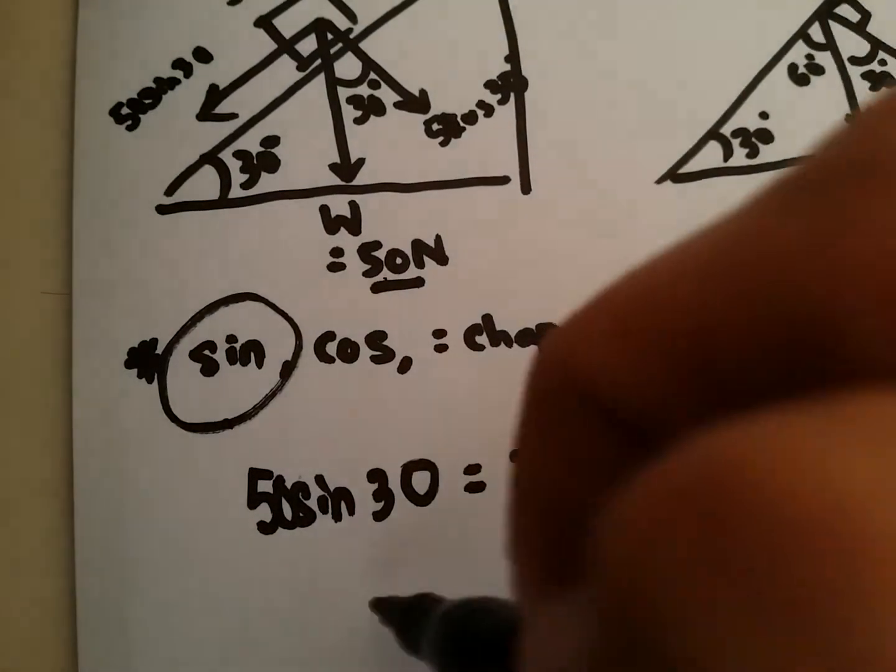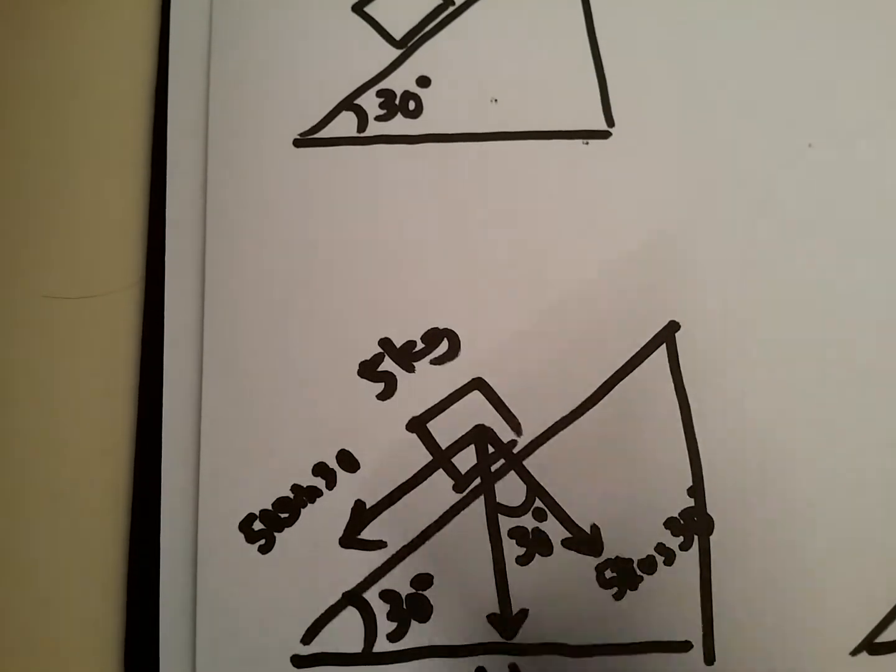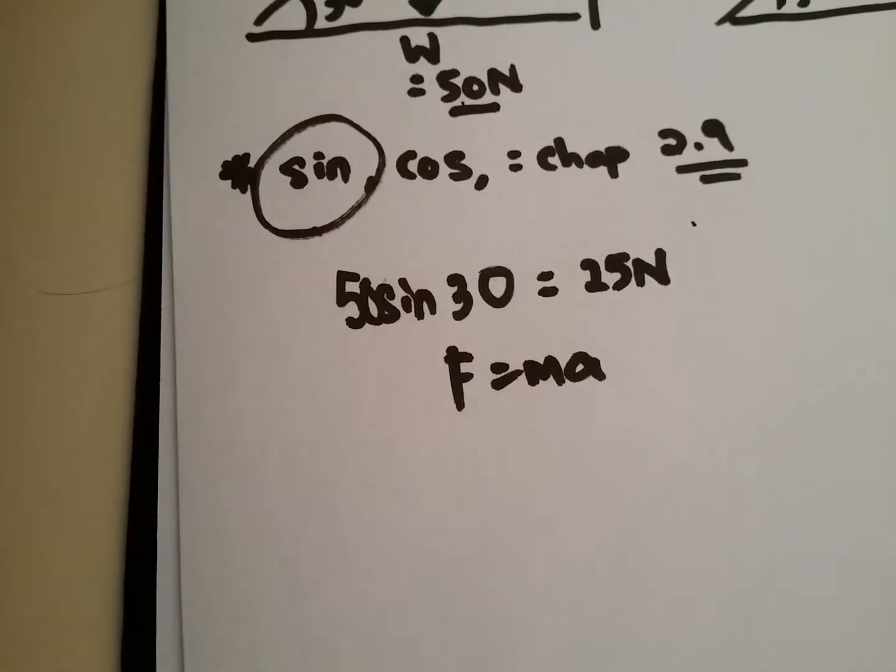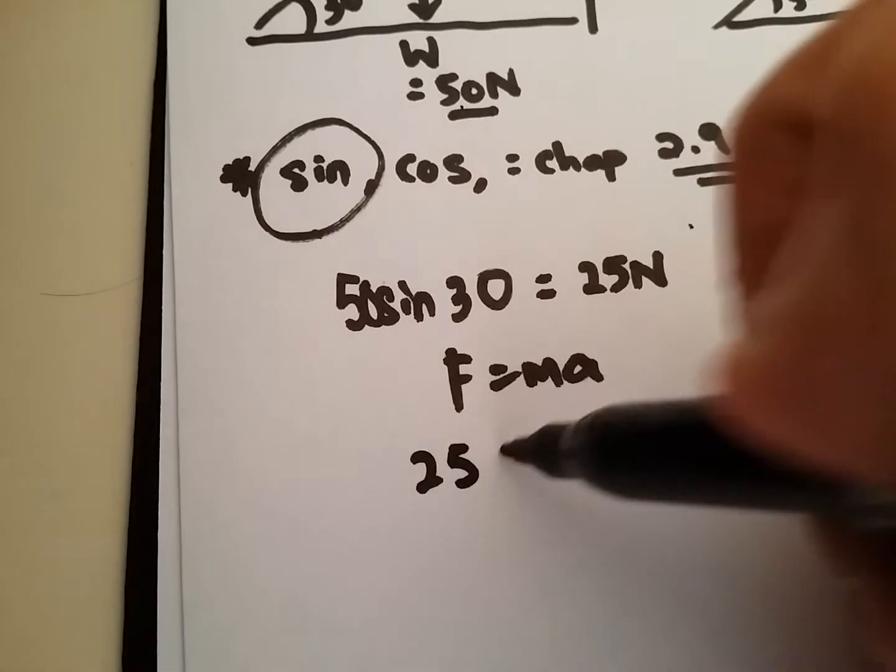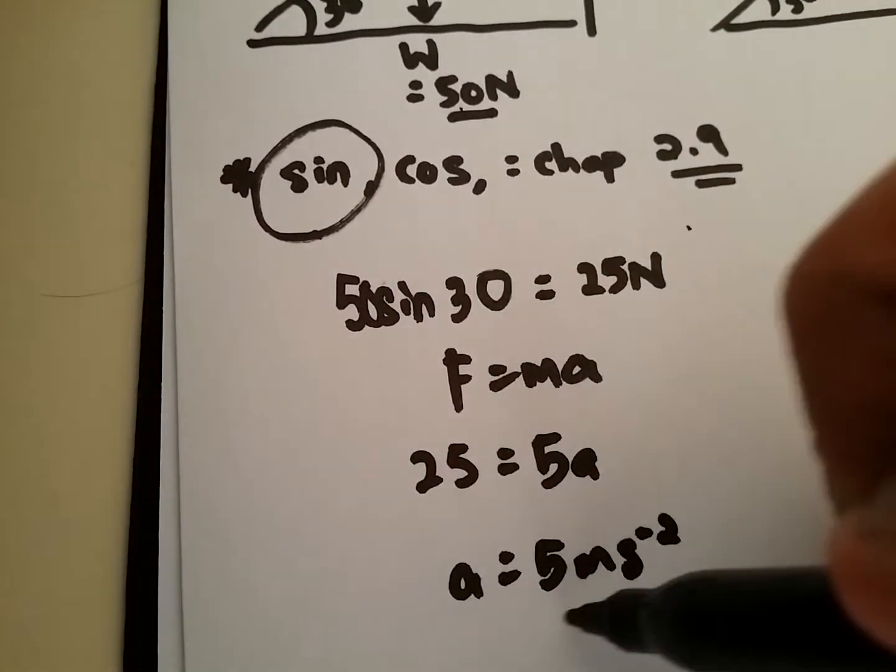So by using 25 newton, I could do a simple F equals to ma, because I found that the force is moving this direction. So by using a simple F equals to ma, 25 newton is equal to mass of 5 a, a is equal to 5 ms negative 2.